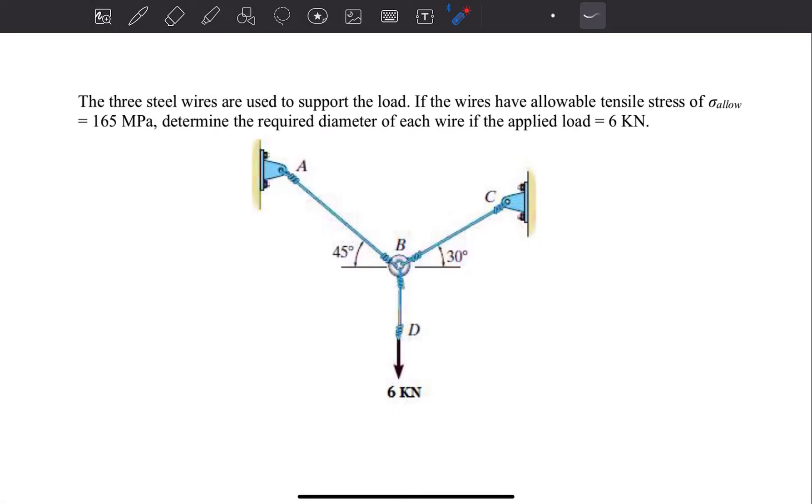Welcome to the first example in Chapter 1, the chapter of stress. The question reads: the three steel wires are used to support the load. If the wires have allowable tensile stress of 165 MPa, determine the required diameter of each wire if the applied load is 6 kN.